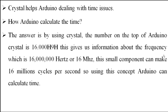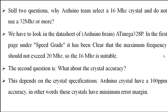Two questions come to mind: why did the Arduino team select a 16 megahertz crystal and not 32 megahertz or more? Looking at the datasheet of the ATmega328, on the first page under the speed grade it is clear that the maximum frequency should not exceed 20 megahertz, so 16 megahertz is suitable. The second question is about crystal accuracy — crystals can have 100 ppm accuracy, meaning a minimum error margin.